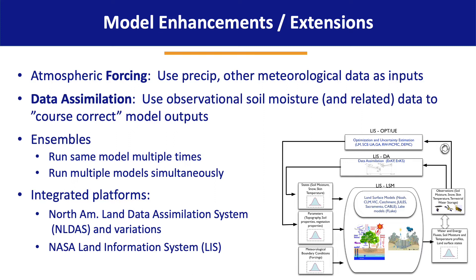In addition, modelers sometimes run ensembles. That could be running the same model multiple times, with the idea that through a series of runs you might get closer to a true value or a better estimation of soil moisture. There's also the opportunity to run multiple models simultaneously, taking advantage of the fact that different models have different strengths and weaknesses, and you might find the ensemble value is more accurate than that from any single model.